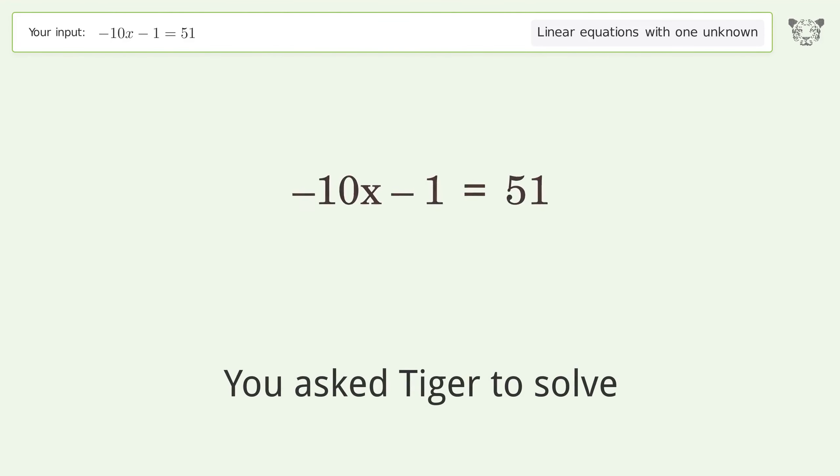You asked Tiger to solve this. This deals with linear equations with one unknown. The final result is x equals negative 26 over 5.